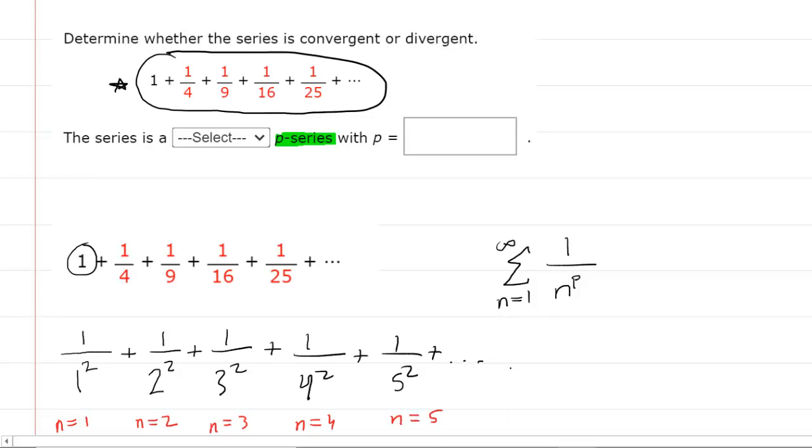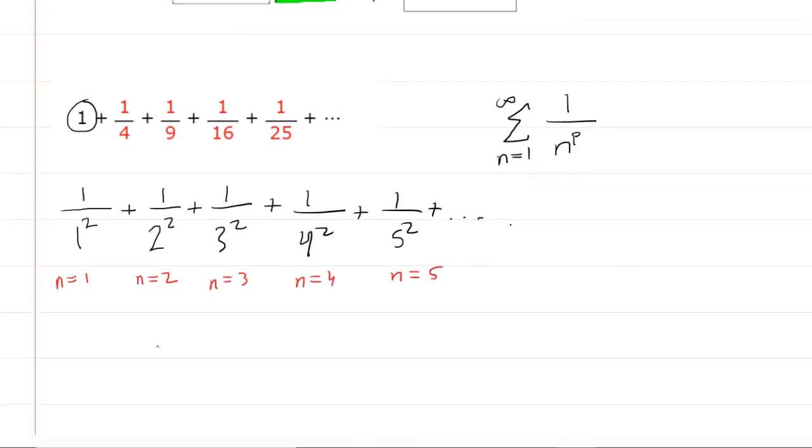If you notice, you can begin to understand that in the denominator, we take the value of n and we end up squaring it. So here we would have n raised to the power of 2.